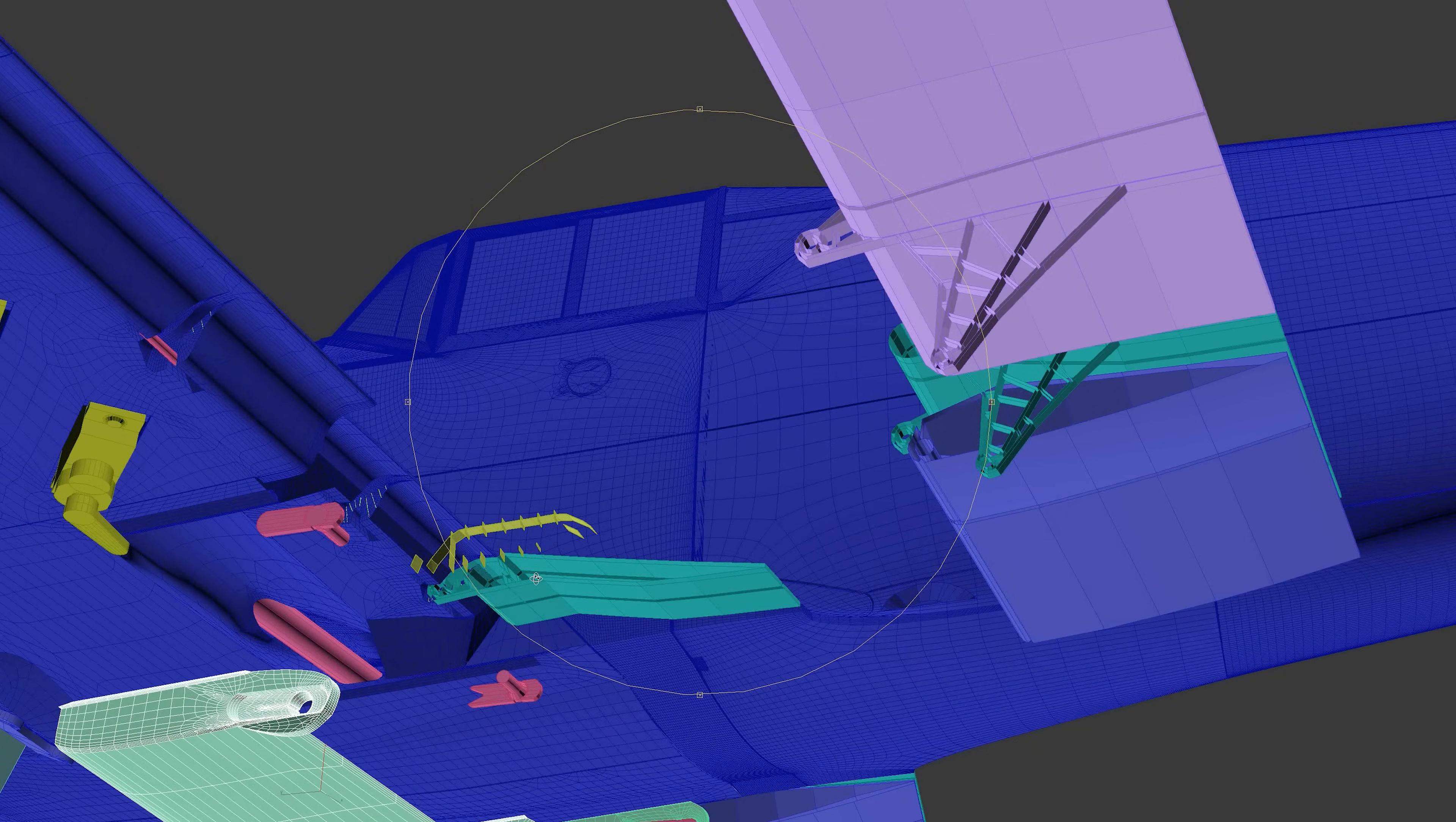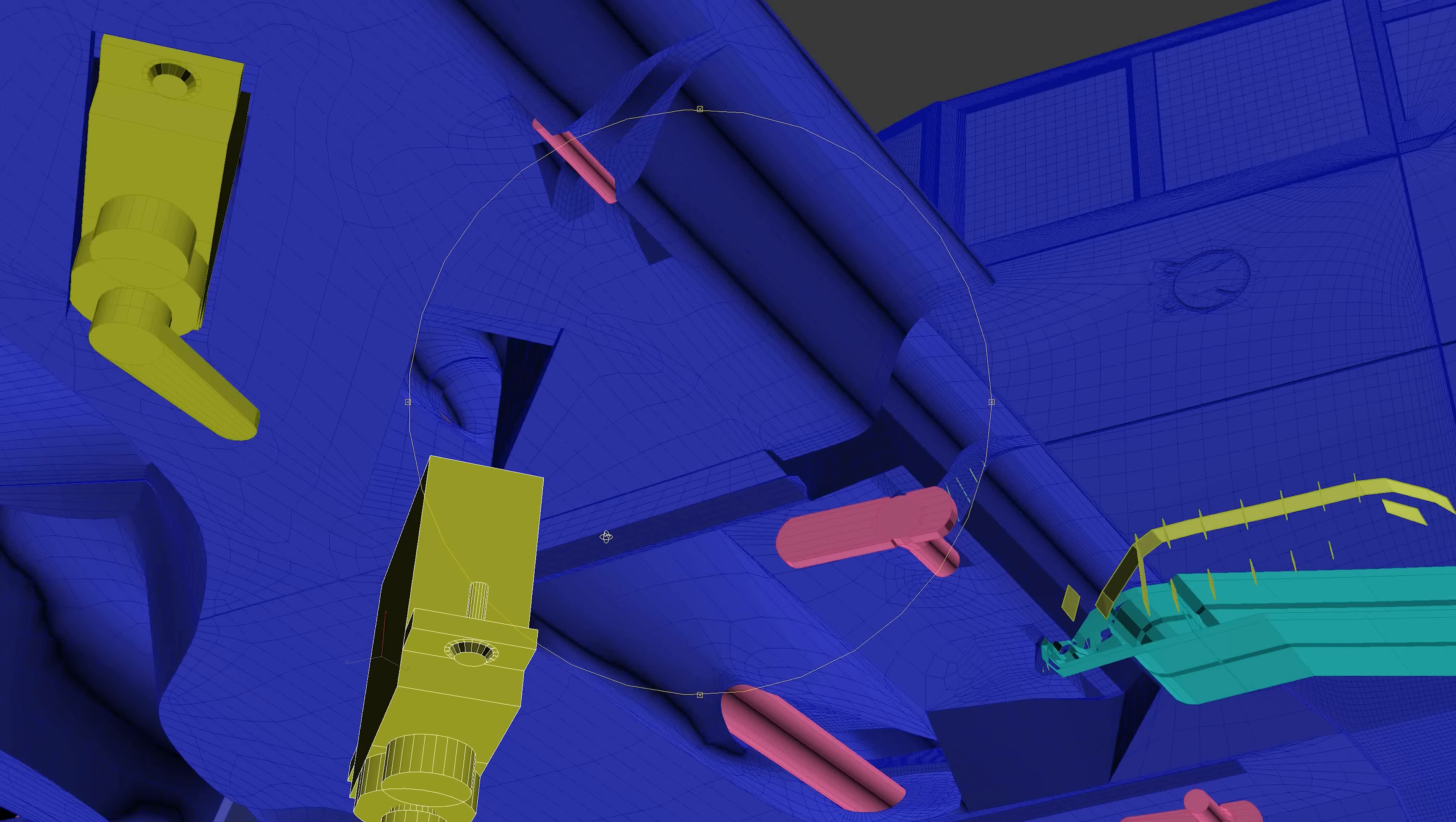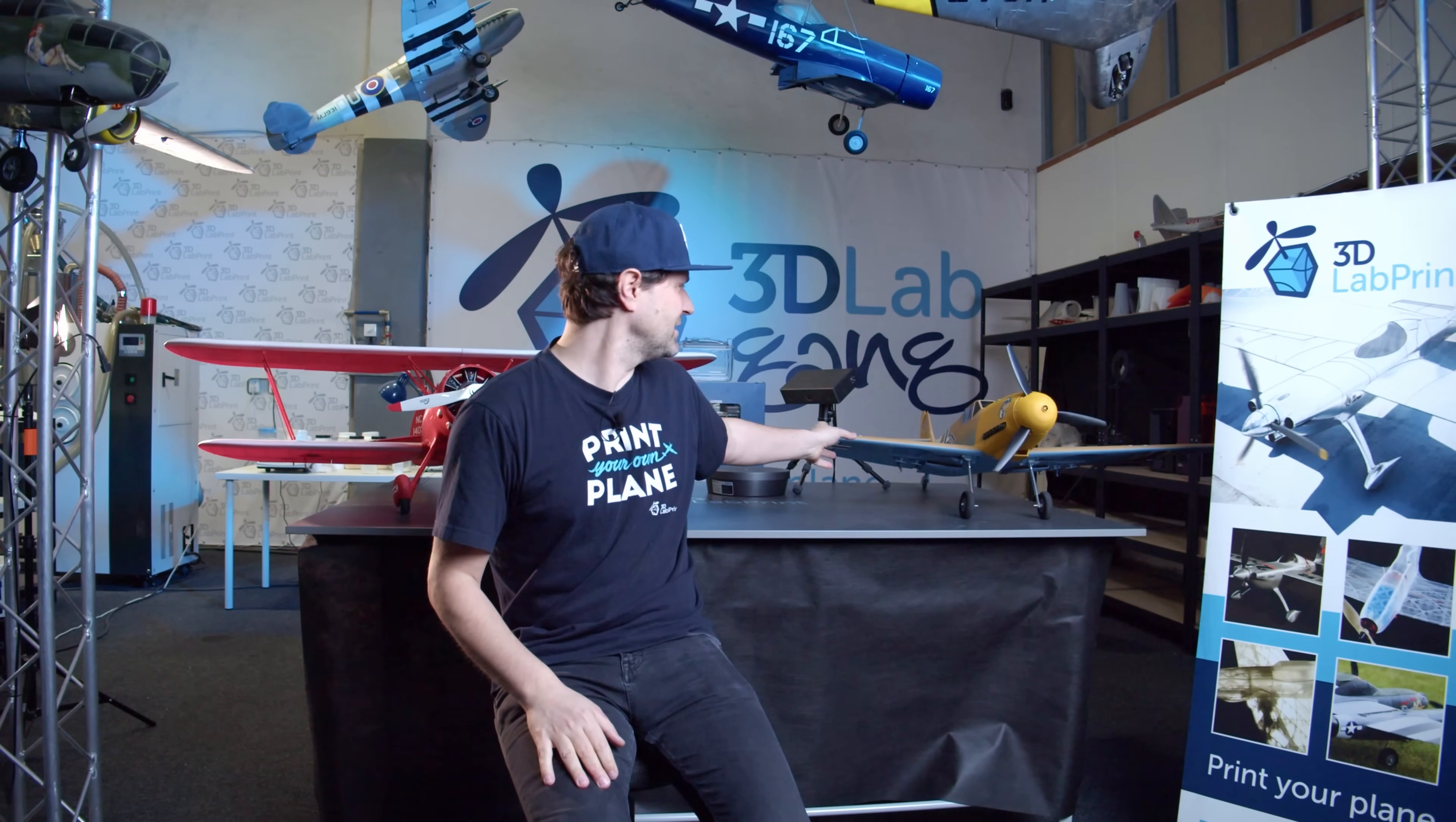But the assembly instructions are vital. If you are building your first airplane, you will really appreciate them. Then of course we upload the data to our website, we also include various bonuses like liveries for example. So after three months of work everything's online and you can download it and print it.